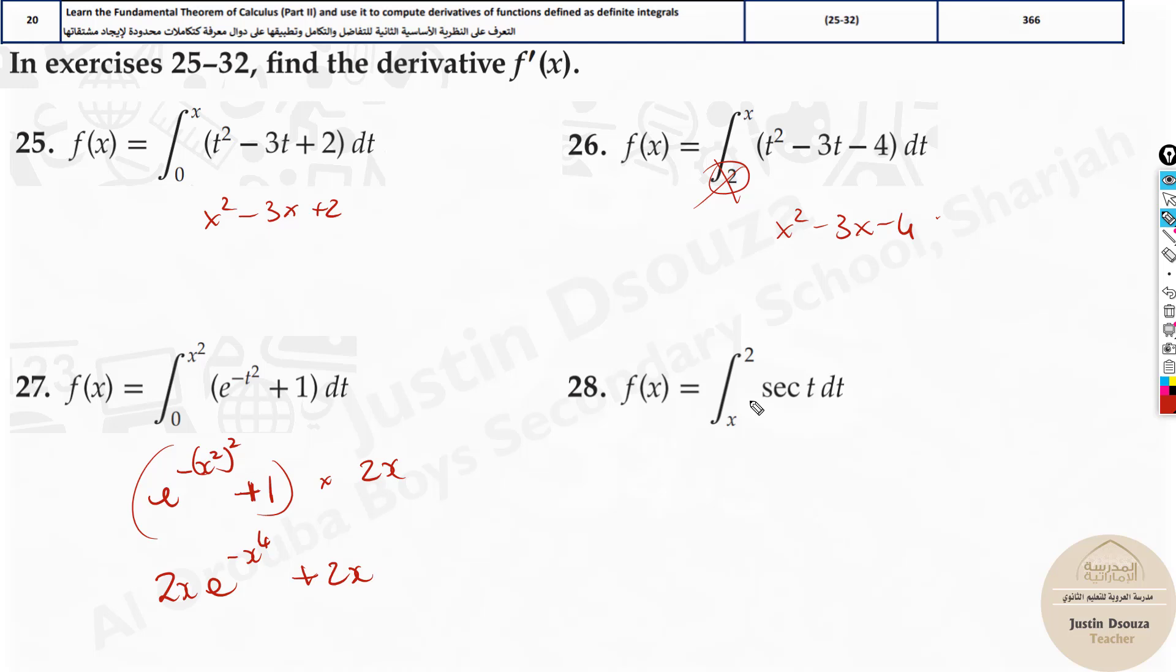Now what about over here? Here, see, you should not have a number here. You should have the variable up. Now you have a number. Number must be down. That goes off. But what you do, what you can do is, you need to swap it out. You need to swap. This becomes x. This becomes 2. It will be secant t dt, right?